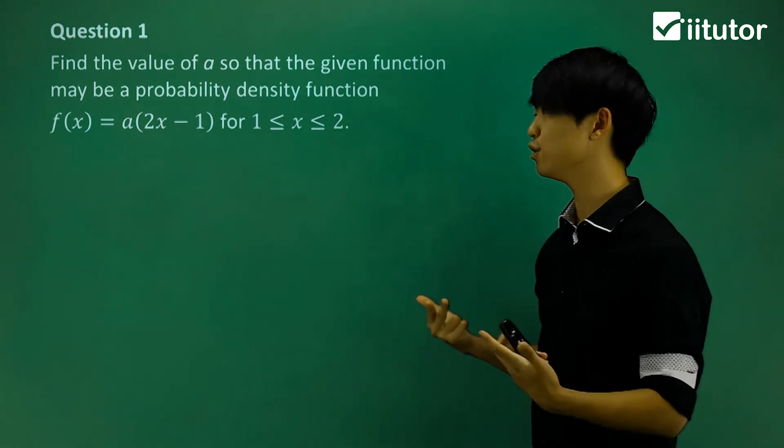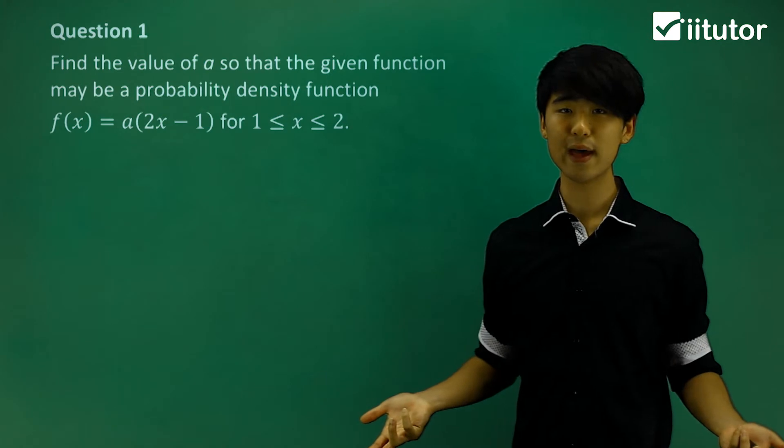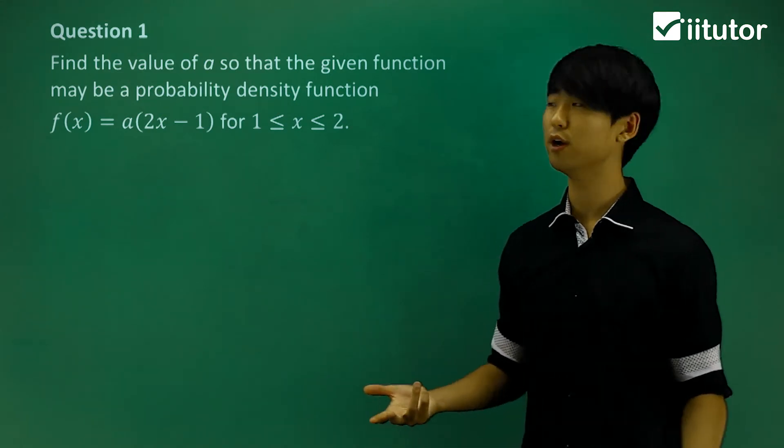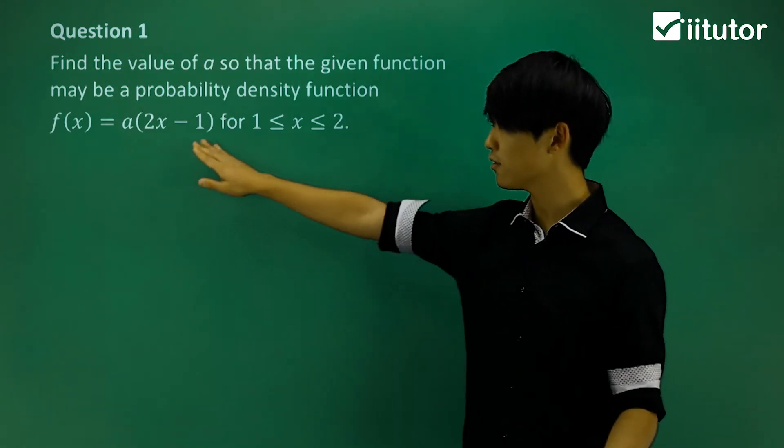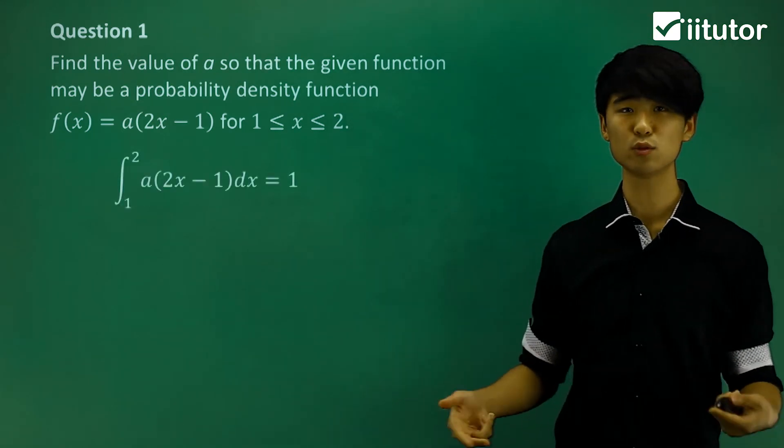Now let's get a little domain in between 1 and 2. So finding the value of a, how are we going to do that? Well, we know that the area under the curve should equal to 1. So area under this function must be equal to 1.